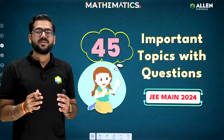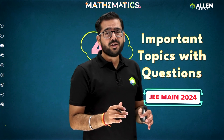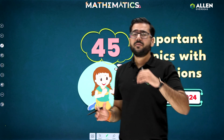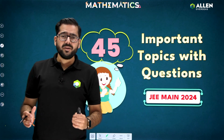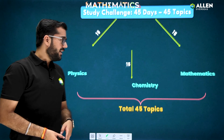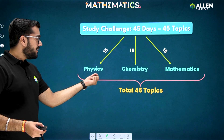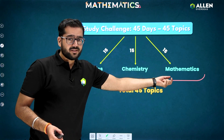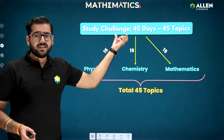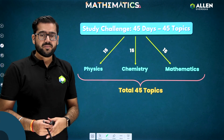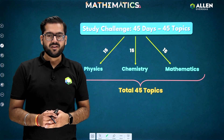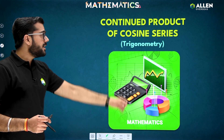Hello everyone, welcome back! Let's continue our special series where we will cover 45 important topics in 45 days, which will be really helpful to all JEE aspirants. The topic distribution is 15 in physics, 15 in chemistry, and 15 in maths. So without wasting too much time, let's start today's topic.